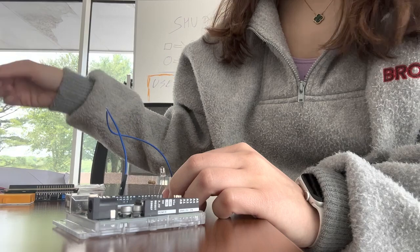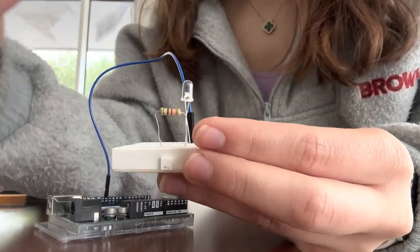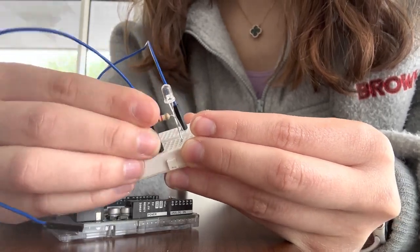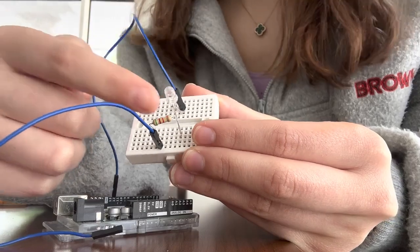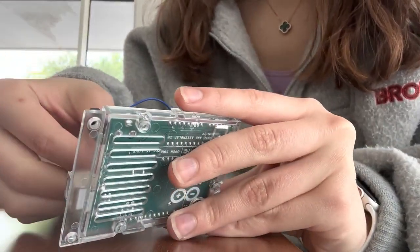And then get another wire, and you want to connect one end of this jumper wire to the same line as the other end of the resistor, not the one that's with the LED, and then connect it to the ground port.